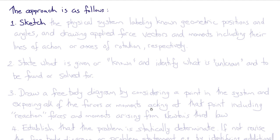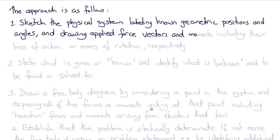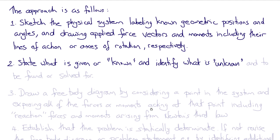So the general approach to solving a problem in statics goes as follows. First, we sketch the physical system, labeling the known geometric positions and angles and drawing the applied force vectors and moments, including their lines of action or axes of rotation, respectively. Next, we state what is given or known and identify what values are unknown and need to be found or solved for.